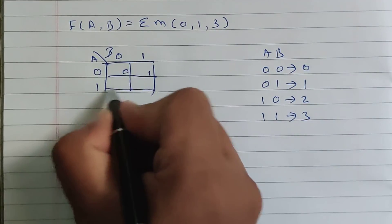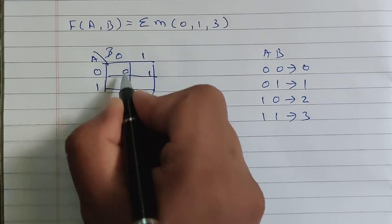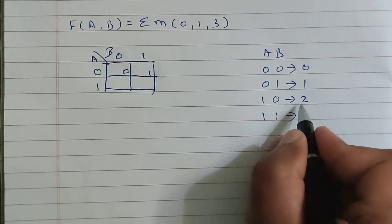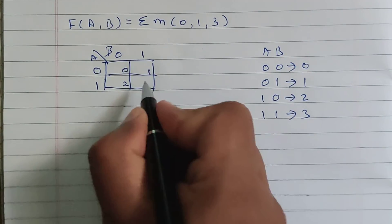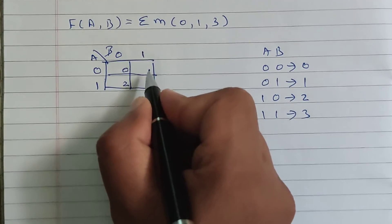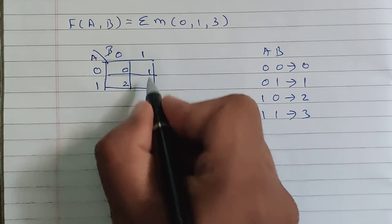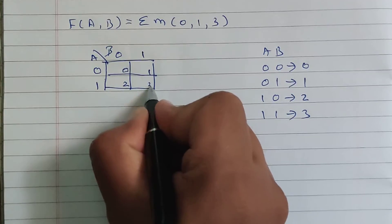Now for this cell, A is equal to 1, B is equal to 0, and 1 0 is 2. That's why we will write 2 over here. And for this cell, A is equal to 1 and B is equal to 1, and 1 1 is 3.